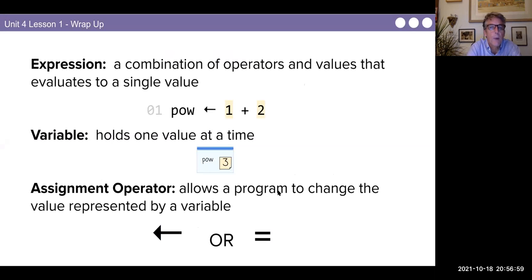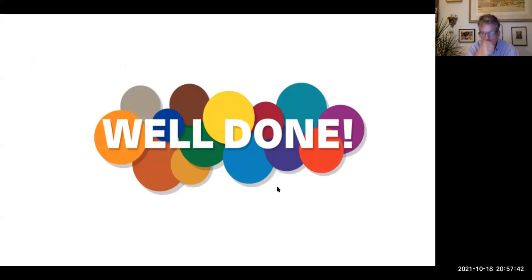An expression is a combination of operators and values that evaluate to a single value. Pow gets one plus two. A variable holds one value at a time. The variable in a baggie, pow. Look, there's my pow. It's got a five in it. Assignment operator allows a program to change the value represented by a variable with an arrow or an equal sign. An equal sign means gets. An arrow means gets. Pow gets three. Well done. Great day.